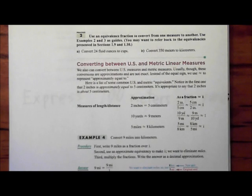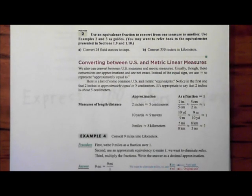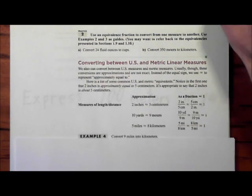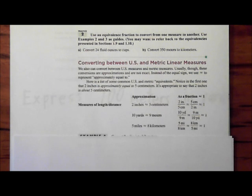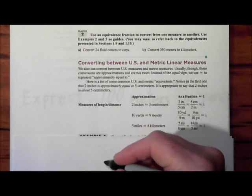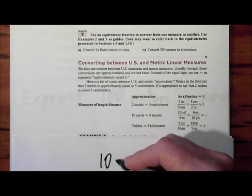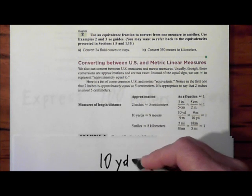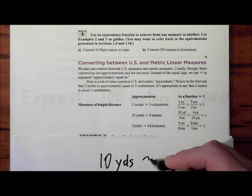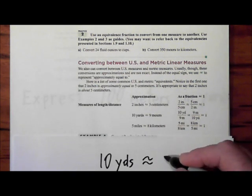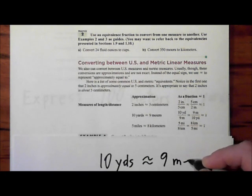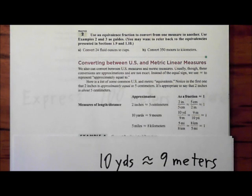It looks like this and that should give you at least an idea of what it looks like. The one that we need specifically says that 10 yards is approximately equal to 9 meters. All right, so this is the equivalency we're going to use.